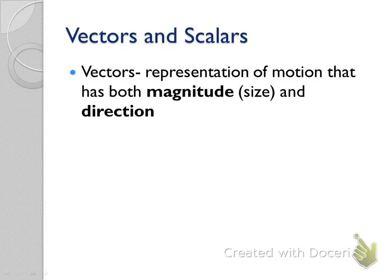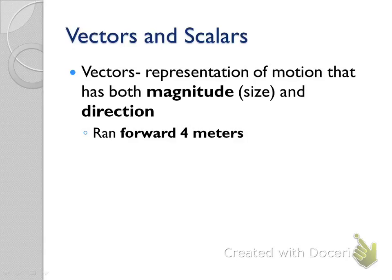Vectors have to have magnitude and direction. An example: 'I ran forward 4 meters' — the magnitude is 4 meters and the direction is forward. Direction can be given with cardinal directions (north, south, east, west), with positive or negative, or with forward, backward, up, down. There are lots of ways to represent direction.